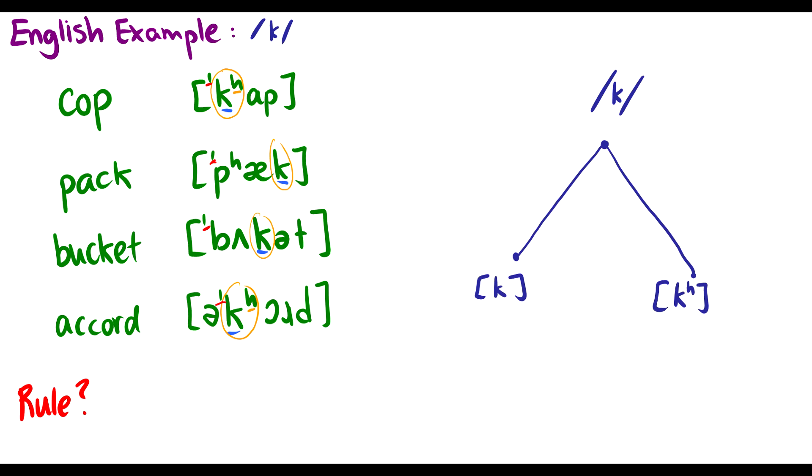So what's the rule here? We have two k's cop, pack, bucket, accord. These are two different k's and we don't really make a distinction between them in English. In fact you might not have even noticed they're different k's until you saw this video which is how I felt when I took my first course. So where do these k's occur? Where is the aspirated k different from the unaspirated k?